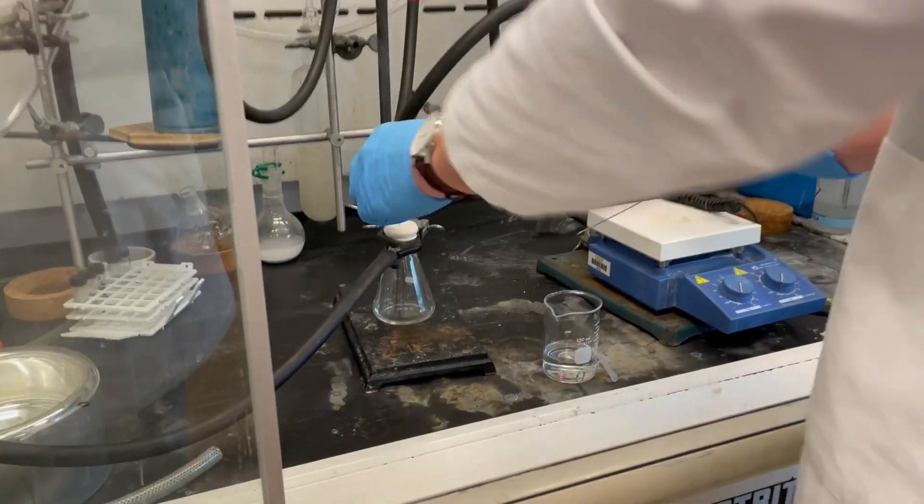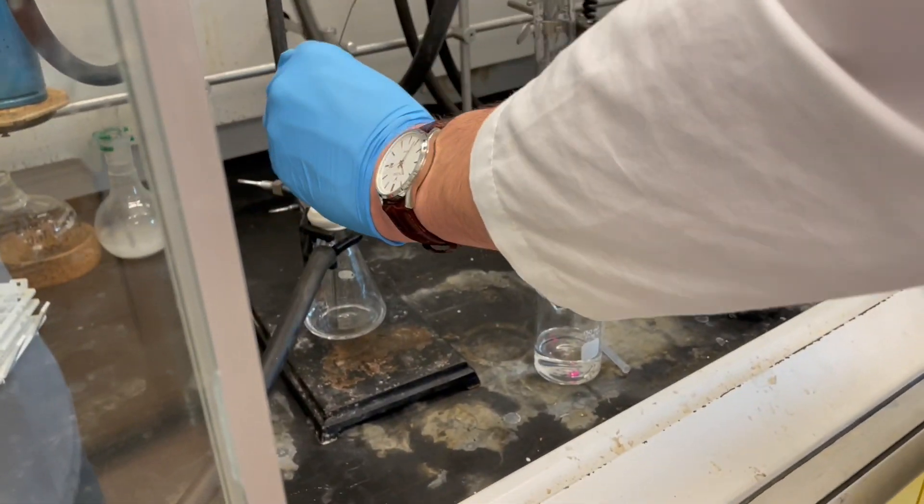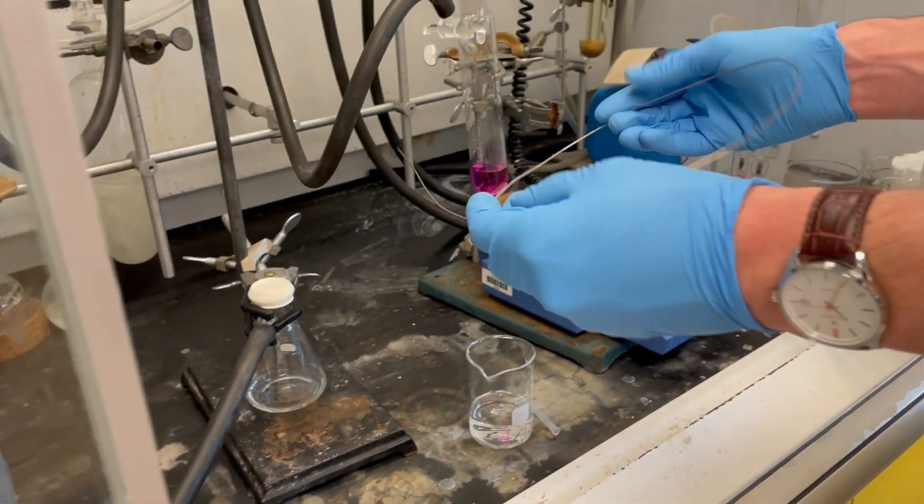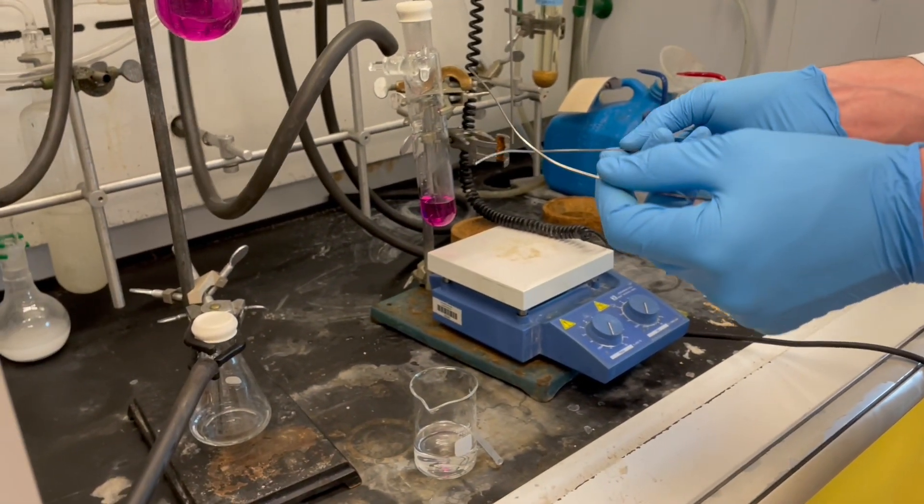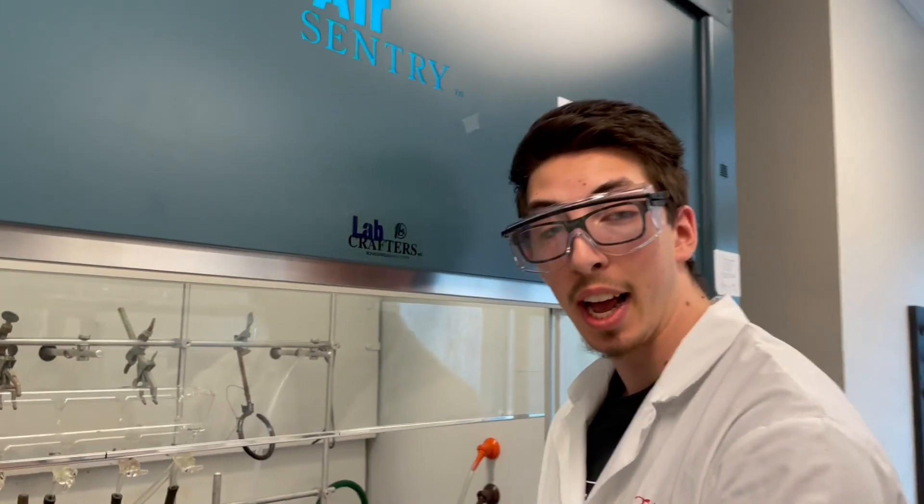Once it's clean, we'll rinse the outside with acetone, rinse it with water, rinse it with acetone one more time, and put it in the oven. And that's how you perform a cannula transfer.